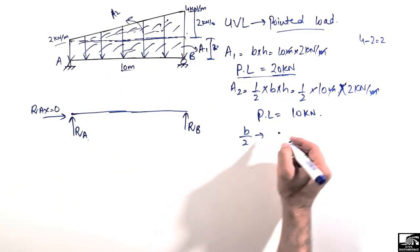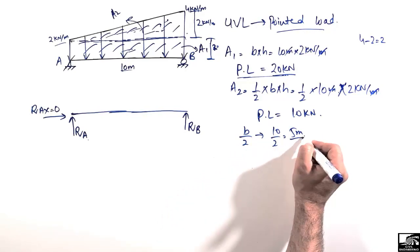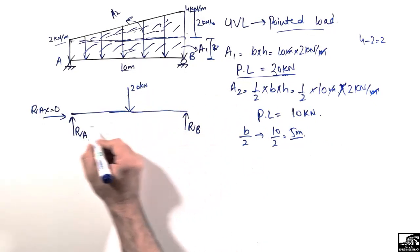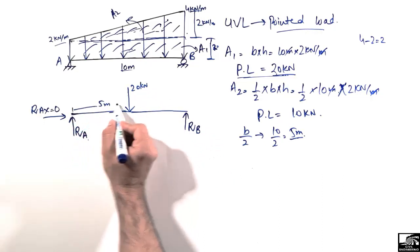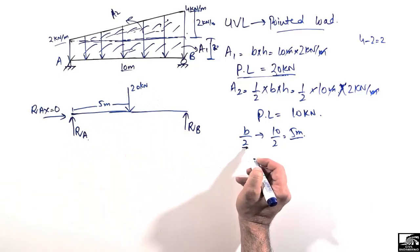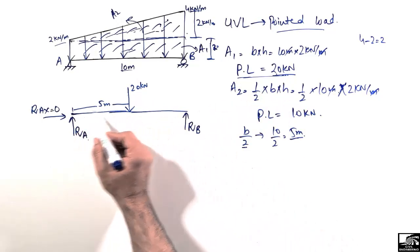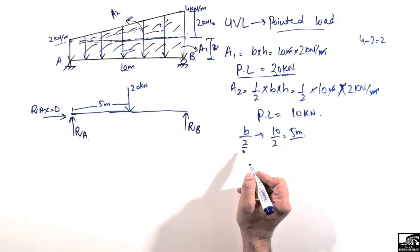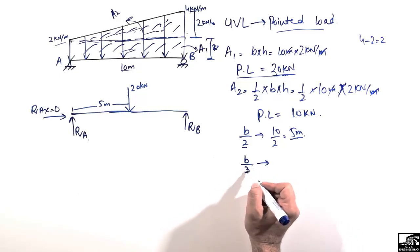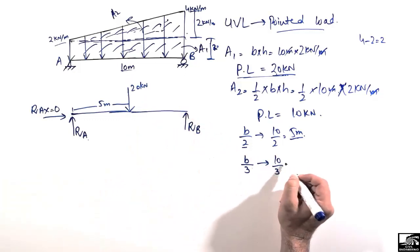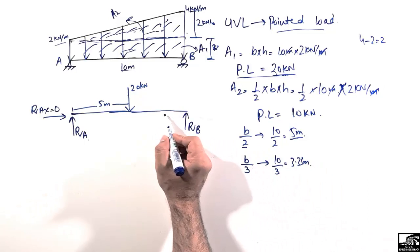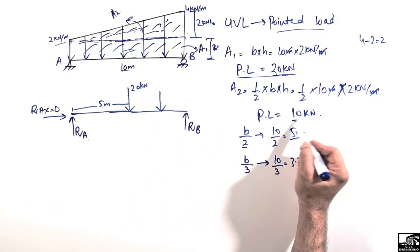These loads act at the centroid of each area. The 20 kilonewton rectangle load acts at the center of the rectangle, which is base divided by 2 — that is 10 divided by 2, equal to 5 meters from the left support. So the rectangle load acts at 5 meters from the support. For the triangle load, we use the formula b/3 to find the centroid.